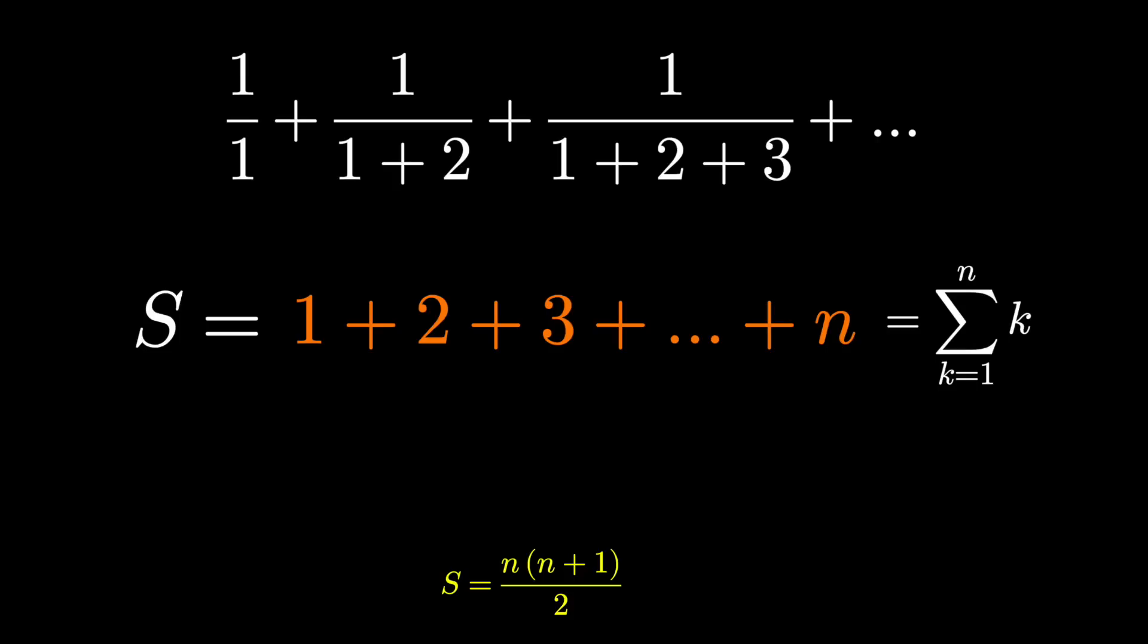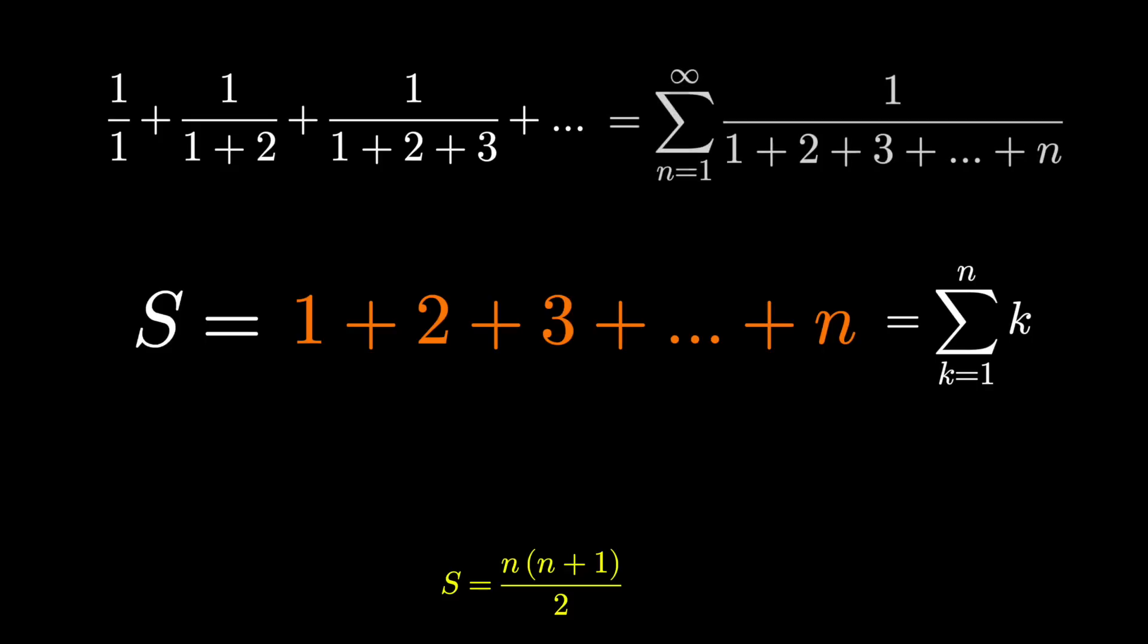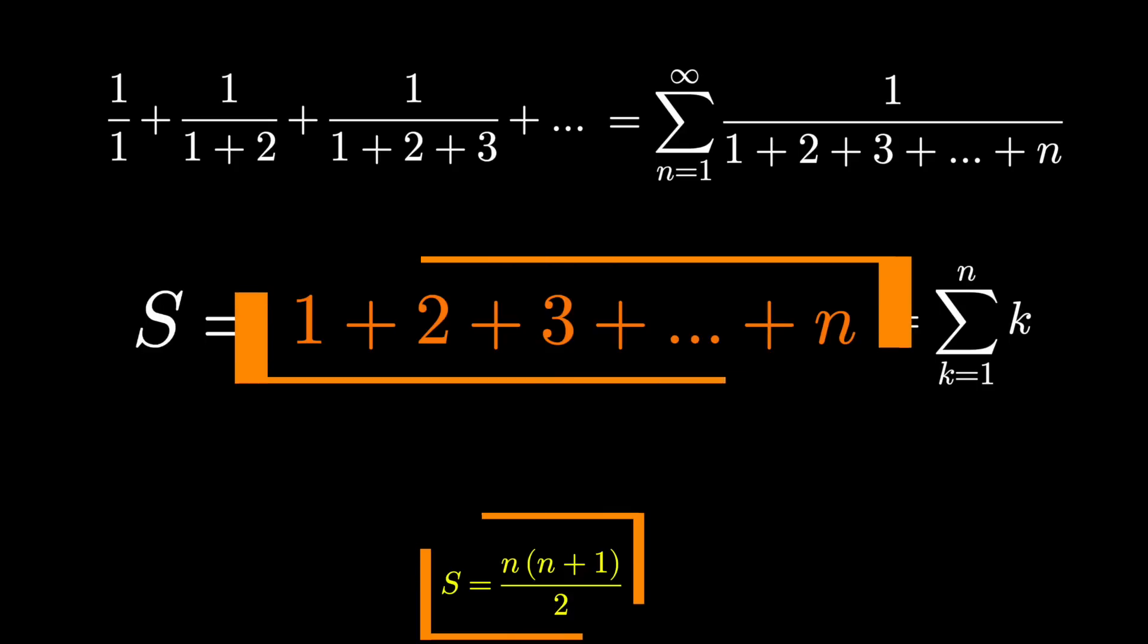What we can notice is that we can write our sum in question using this summation notation. We could write it as the sum from n equals 1 to infinity of 1 over 1 plus 2 plus 3 plus 4, all the way up to n, which is this summation we just found.